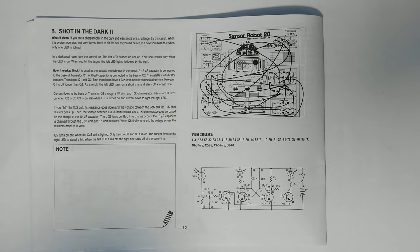So this is project number eight, Shot in the Dark 2. What it does: if you are a sharpshooter in the dark and want more of a challenge, try this circuit. When this project operates, not only do you have to hit the cell as you hit it before, but now you must do it when only one LED is lighted. In a darkened room, turn the control on. The left LED flashes on and off. Your shot counts only when the LED is on. When you hit the target, the left LED lights, followed by the right.